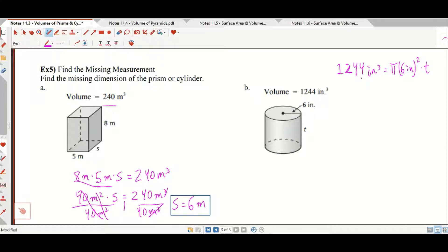So it's T. Now 6 times 6 is 36. And inches times inches is inches squared. So we're going to get 1244 inches cubed equals 36 pi inches squared times T. From here we can divide both sides by 36 pi inches squared. So everything here divides out.